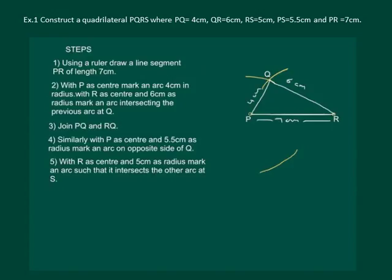Now with R as center and 5 cm as radius, mark an arc such that it intersects the other arc at S. Now join PS and RS.